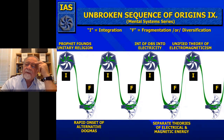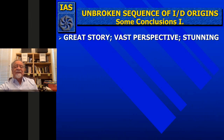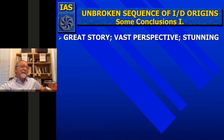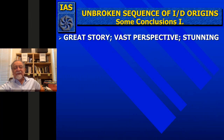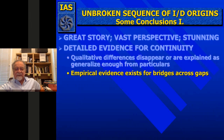Let's look at some conclusions. This is a great story of vast perspective. I'm pissed that I started this in the 1970s and did it consistently through half a century, and now people like David Christian are getting funding from Bill Gates in the millions of dollars to do what he calls 'big history'—and he's a historian of Russia. Basically, he's taking a lot of these results, which are all from scientists and Nobel laureates who've done their entire life work on this stuff. There's detailed evidence for the continuity; we can show how qualitative differences disappear or can be generalized, getting isomorphies across all of these.